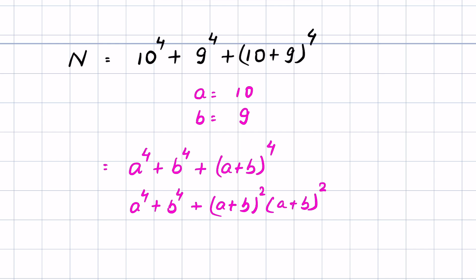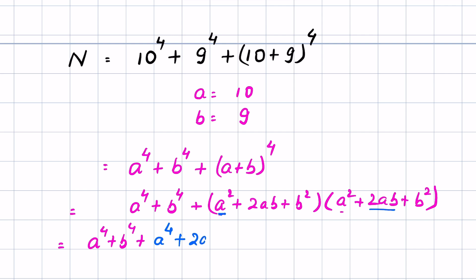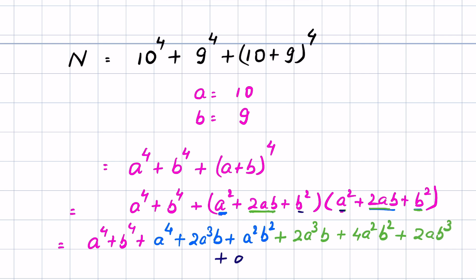Writing the formula of (a plus b) whole squared as (a squared plus 2ab plus b squared) times (a squared plus 2ab plus b squared), and multiplying each of these terms: a squared times a squared is a to the power 4, a squared times 2ab is 2a cubed b, a squared times b squared is a squared b squared, 2ab times 2ab is 4a squared b squared, 2ab times b squared is 2ab cubed, and b squared times b squared is b to the power 4.